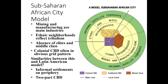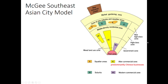The Sub-Saharan city model shares similarities with the Latin American model — poor squatter settlements or informal satellite townships toward the outside, and a two-part CBD. This model seems very much like the concentric zone model, at least in its circular structure. Finally, we have the McGee Southeast Asian city model, which looks kind of like the sector model, with pie slices coming out from the middle.